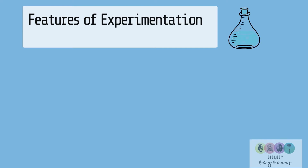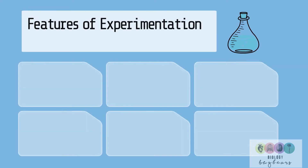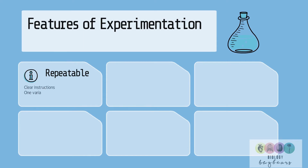Experiments are central to the scientific method. So what are the features of good experimentation? Well firstly, the experiment should be repeatable. There should be clear instructions and there should be one variable change — the independent variable — and all other variables remain constant. They should be non-biased.